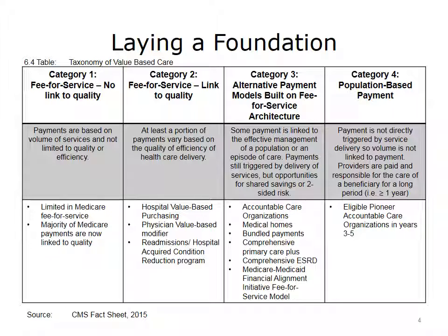HHS divided characteristics of the payment plans into four categories, as shown in this table. This lecture focuses on the models described as Category 2, where fee-for-service payments remain in place, and there is an added payment element related to quality measures.